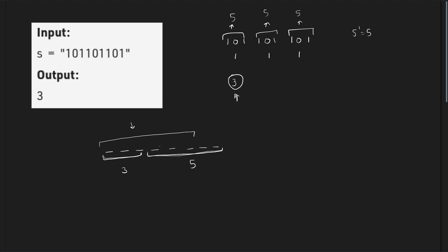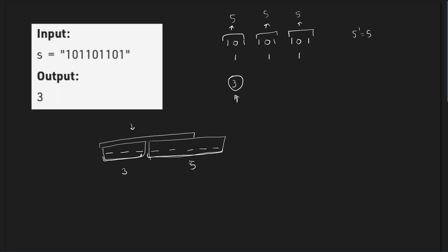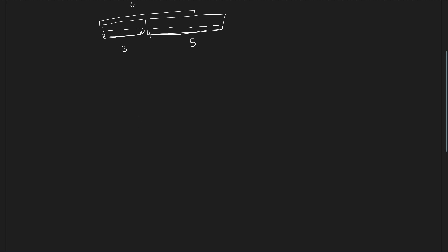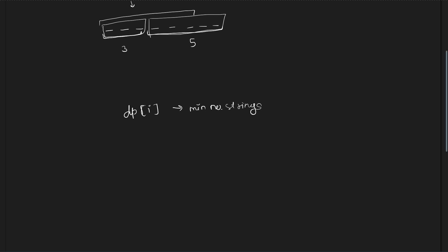What we have to do is, for each position, check whether the current substring is a power of 5 and whether the remaining string can also form powers of 5, and if so, what is the minimum number of pieces. We will maintain a DP array where dp[i] denotes the minimum number of strings I need to divide the substring starting from index i such that they are all powers of 5. So dp[0] will store the final answer.